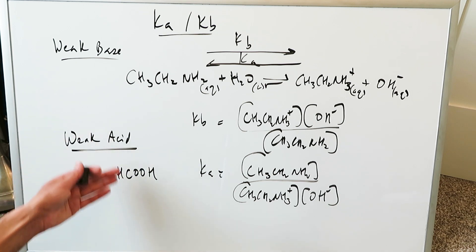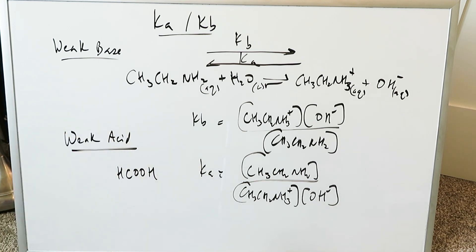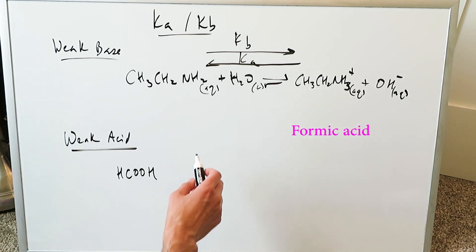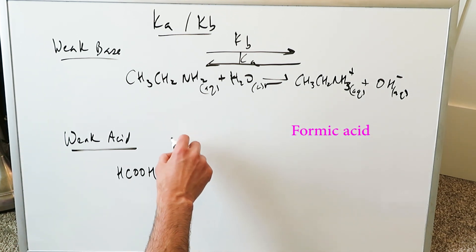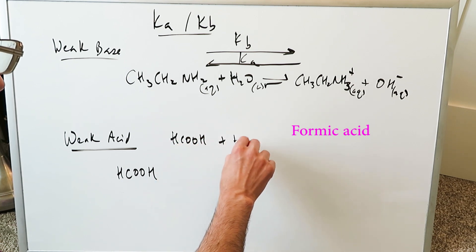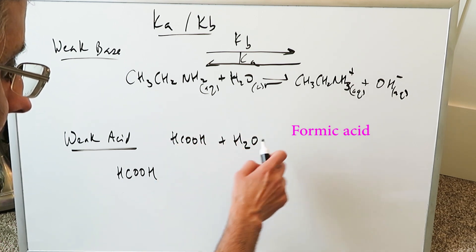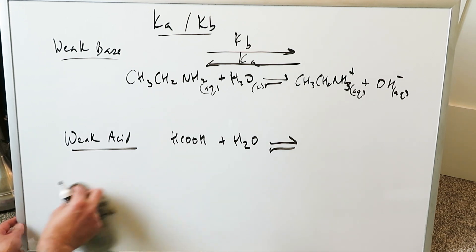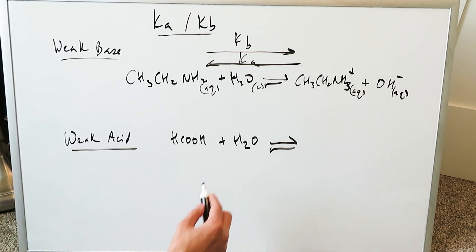A similar analysis comes into play for a weak acid, and we'll do that next. A good weak acid can be acetic acid, but here I'm looking at formic acid. When you put formic acid in the presence of water, you're looking at a weak acid in the presence of water. It's not going to 100% dissociate because it's a weak acid. You will generate a conjugate acid and a conjugate base.